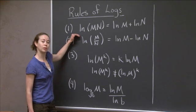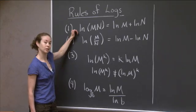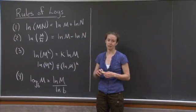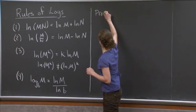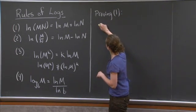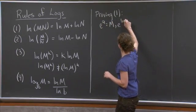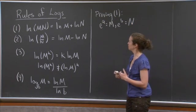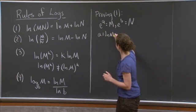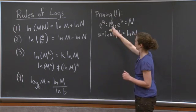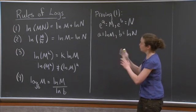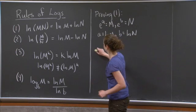Using what we know about exponential and log functions, I want to prove rule number one. In order for the expression to make sense, m and n have to be positive. With m and n both positive, I can find values a and b such that e to the a equals m and e to the b equals n. Because exponential and log functions are inverses of one another, this means a equals natural log of m and b equals natural log of n — these are equivalent statements.